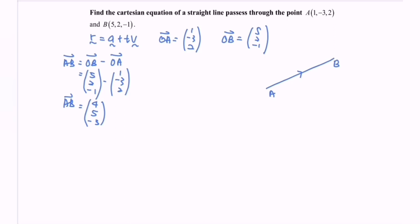Now try to substitute. So situation number 1, where we have R equals 1, negative 3 and 2, plus with T, where we have the direction 4, 5, negative 3. Continue. X equals 1 plus 4T. Y equals negative 3 plus 5T. Z equals 2 minus 3T.